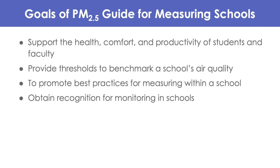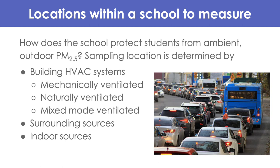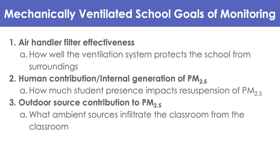Our goals for measuring PM 2.5 in schools are similar to the CO2 guide: support the health, comfort, and productivity of students and faculty, provide thresholds to promote best practices, and have schools obtain recognition for monitoring. When looking at locations within a school to measure, we most often want to know how the school protects students from ambient outdoor PM 2.5. Key considerations include the building's ventilation system — strategies differ significantly between mechanically and naturally ventilated schools — surrounding sources like vehicular traffic or construction, and indoor sources like flooring type, physical activities, or cleaning supplies.